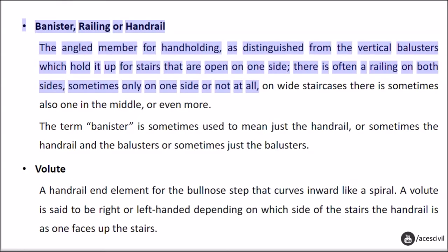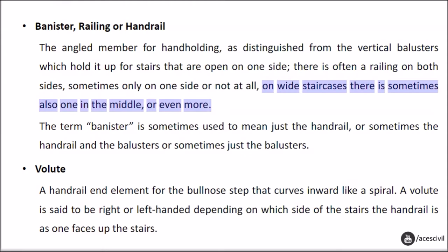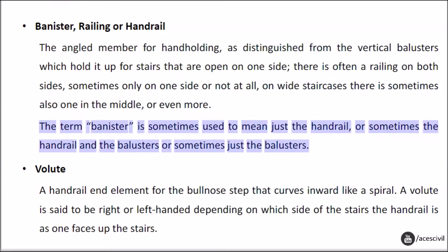Bannister, railing, or handrail: the angled member for hand-holding, as distinguished from the vertical balusters which hold it up. For stairs that are open on one side there is often a railing on both sides, sometimes only on one side or not at all. On wide staircases there is sometimes also one in the middle or even more. The term banister is sometimes used to mean just the handrail, or sometimes the handrail and the balusters, or sometimes just the balusters.